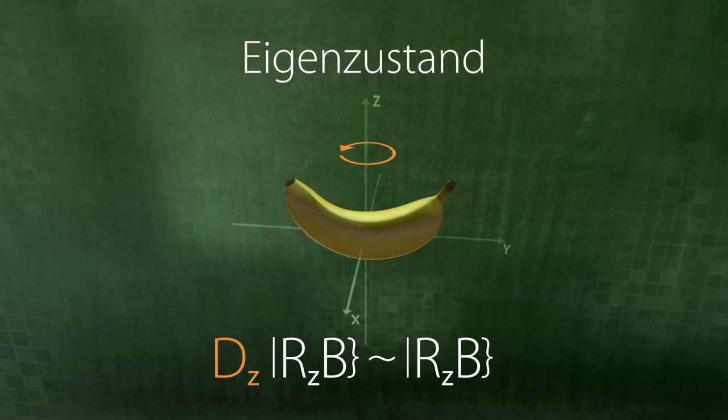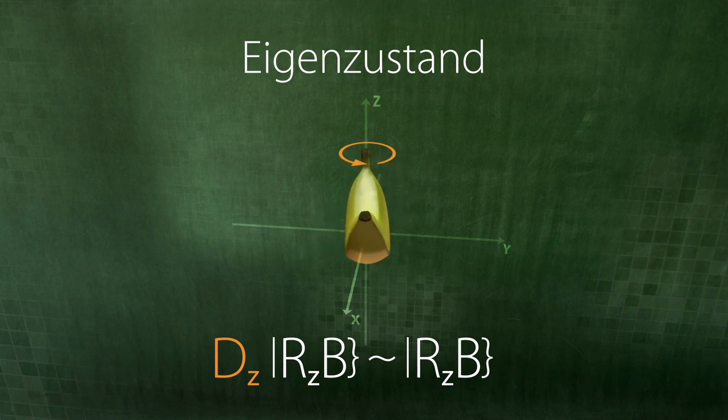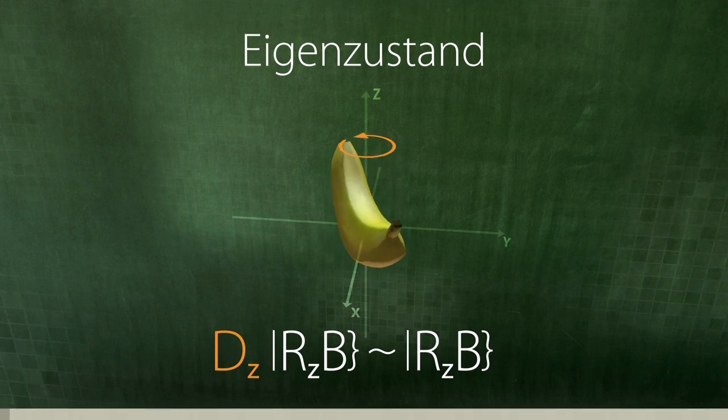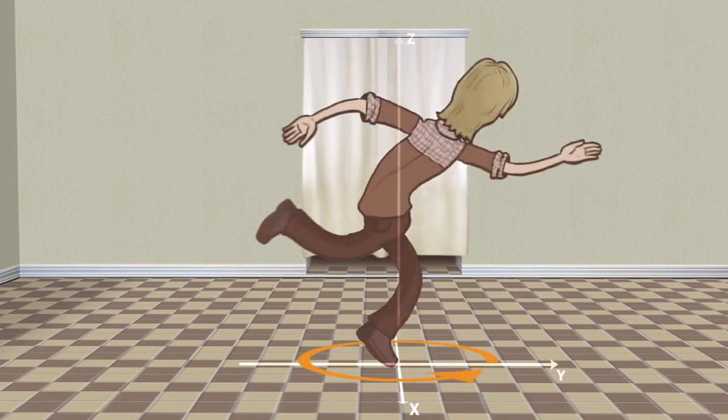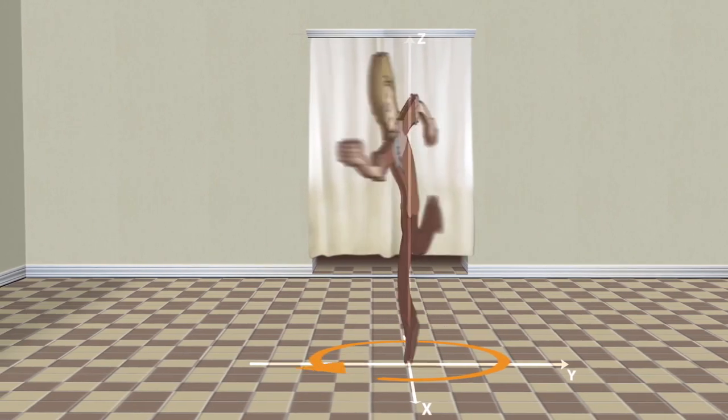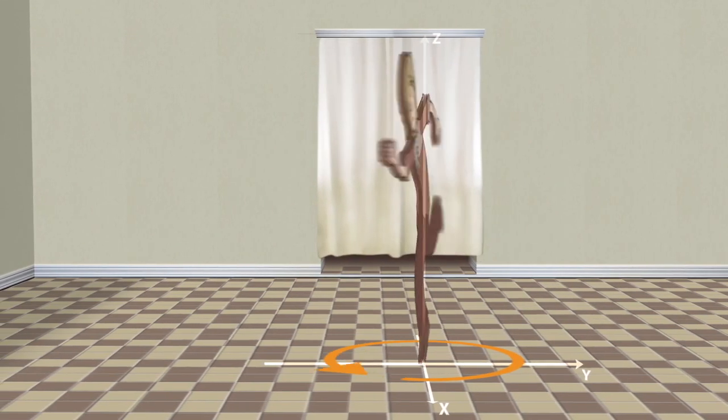Generally speaking, the eigenstate does not change when the corresponding operator is applied. Be careful, though. The only rotation operator that does not change the state is the one that rotates it along the specified axis. Rotation about an incorrect axis will surely change the state.